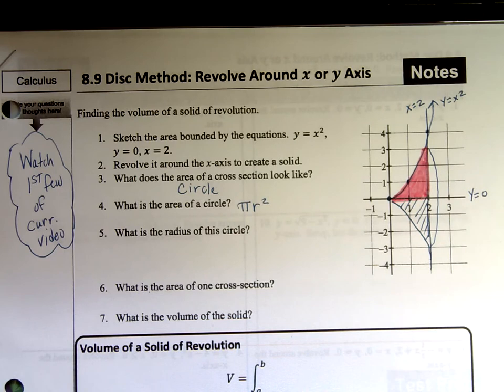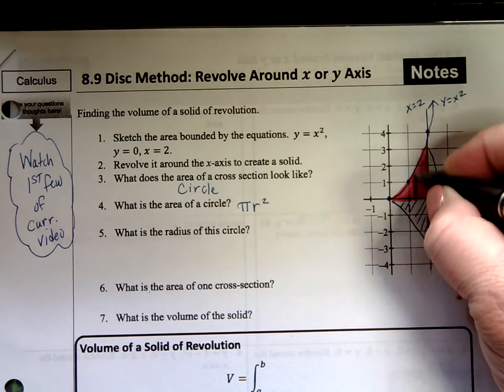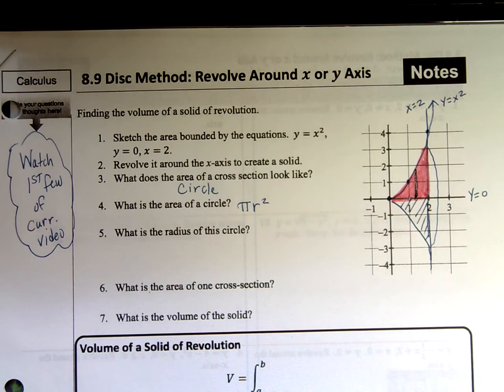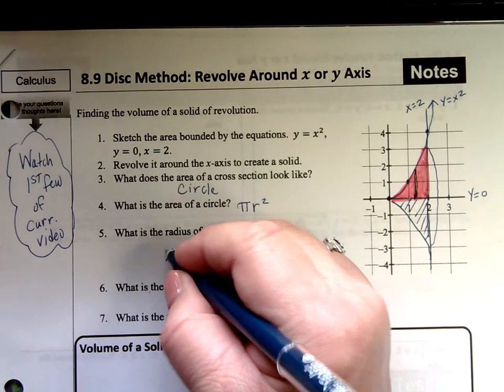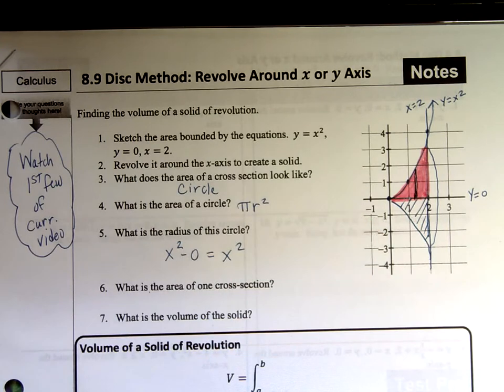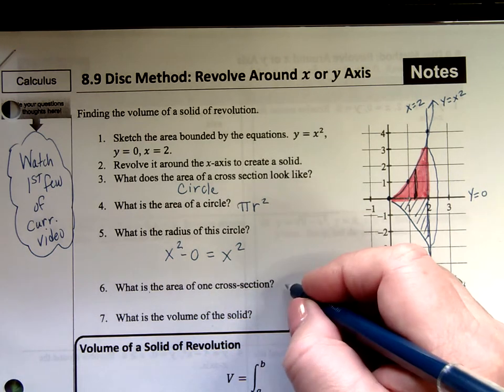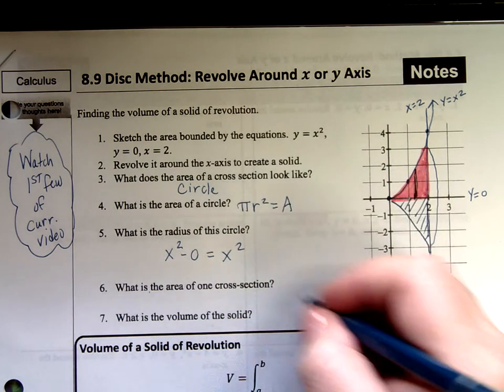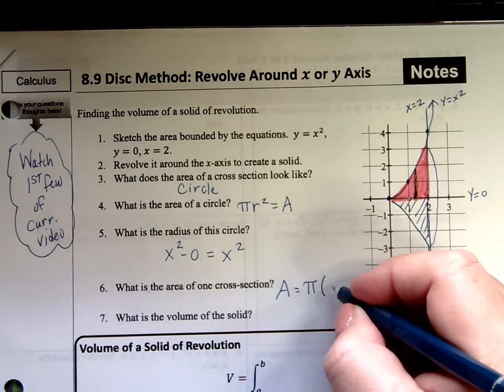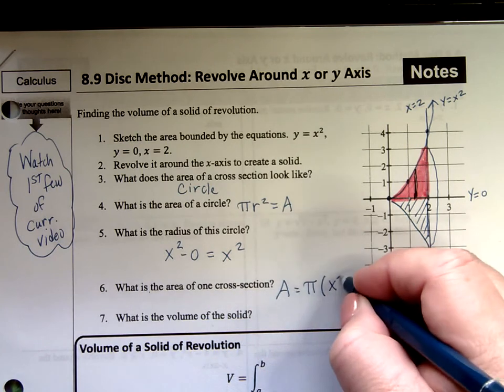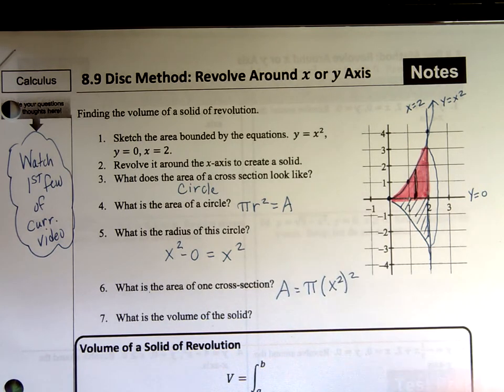What's the radius of the circle? Well, in our case, the radius would be just this much, right? That would be the radius because that's half of the diameter. And so the radius would be the top minus the bottom, x squared minus 0, or just x squared in our case, top minus bottom. What's the area of one cross section? Well, if this is the radius and my area formula is pi r squared, then my area for one cross section is going to be pi times my radius, x squared squared, or pi x to the fourth.